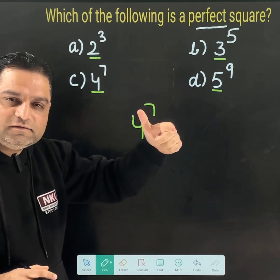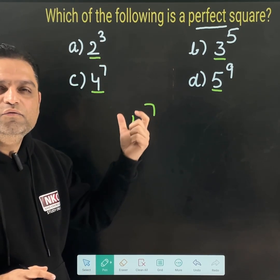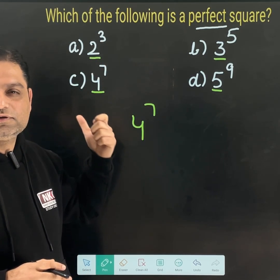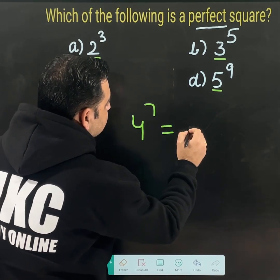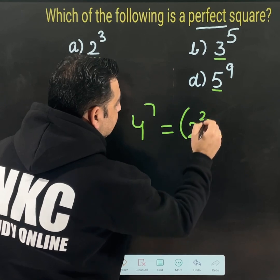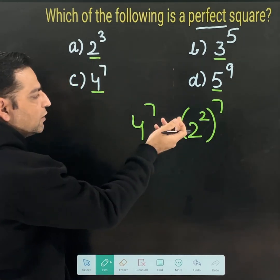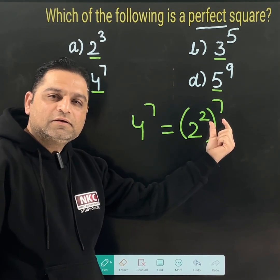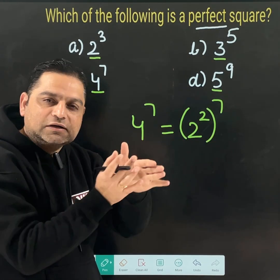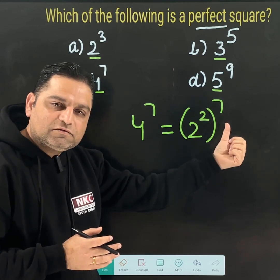Frankly telling you, 4 to the power 7 is the answer, but I am going to explain why I considered 4 to the power 7 as a perfect square. See, 4 can be written as 2 squared. Now, this 2 and 7, both exponents are actually multiplied. You will get 2 to the power 14.